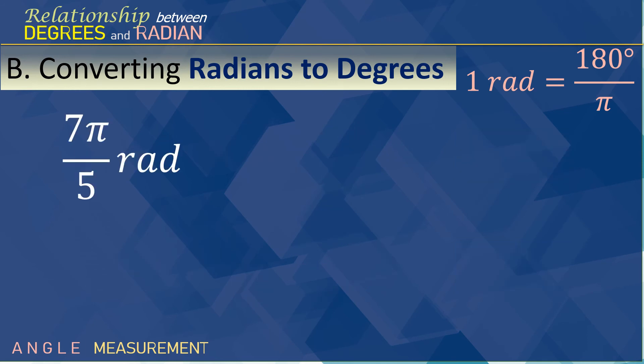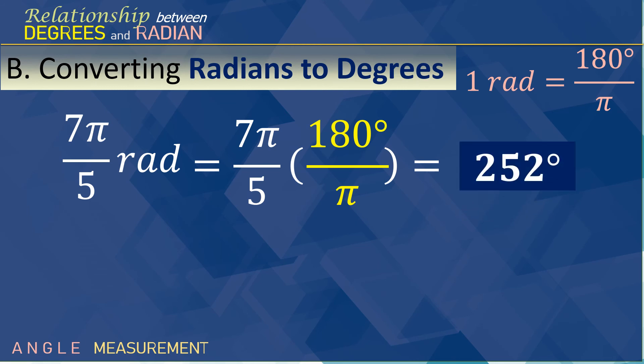We have the next example. 7 pi over 5 radians. We do the same. We multiply that 180 degrees over pi. We cancel out this one, pi here. So, we have 252 degrees.